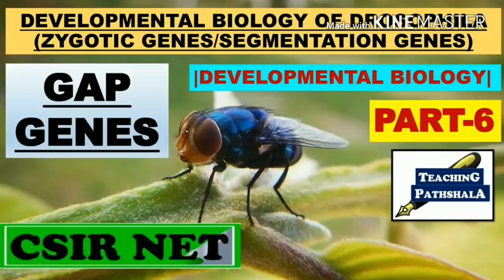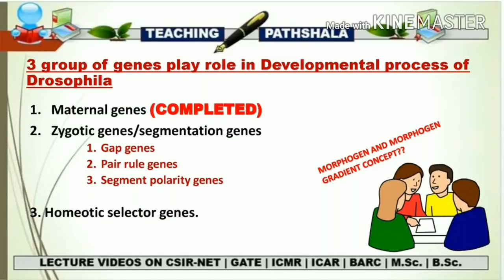If you have not seen the rest of the parts of developmental biology of Drosophila, I will mention the link in the description box as well as at the end of the video. I have already described the three groups of genes that play a very important role in the developmental process of Drosophila. The first is the maternal genes, about which we have discussed anterior and posterior axis formation, dorsal and ventral axis formation. Now it is the turn of our zygotic genes, also known as segmentation genes, which are categorized into gap genes, pair rule genes, segment polarity genes, and homeotic selector genes.